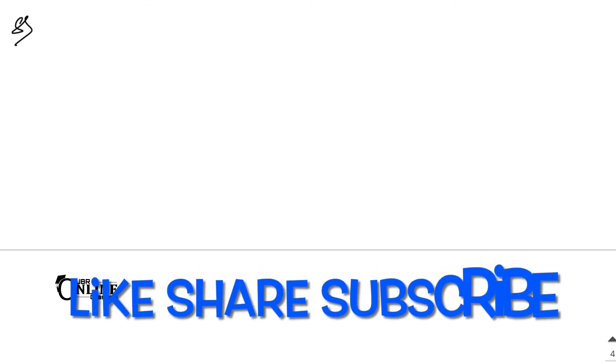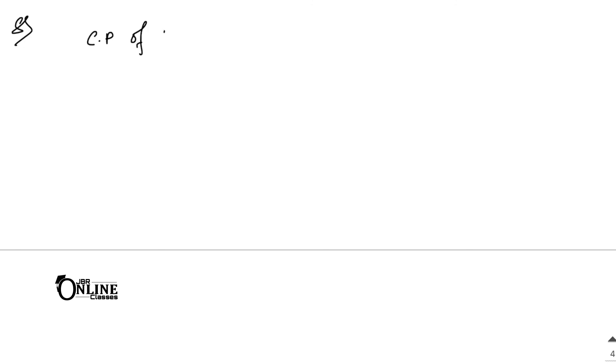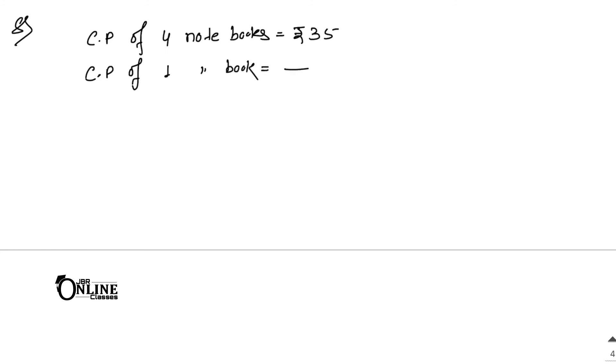Please like, share, and subscribe to my channel. Sum number eight: Rao bought notebooks at the rate of 4 for rupees 35 and sold them at the rate of 5 for rupees 58. Calculate his gain percentage. CP of 4 notebooks equals rupees 35, so CP of 1 notebook equals 35 by 4, which is 8.75.